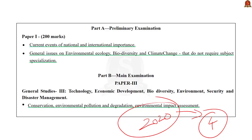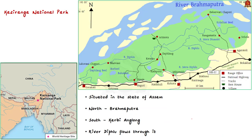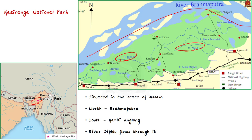Kaziranga National Park — have a look at this map for better understanding. As you can see, Kaziranga National Park is located in Assam. The Brahmaputra River flows along the edges of the National Park, so Kaziranga is situated on the southern banks of the Brahmaputra. River Diphu (T-I-P-H-L-U) flows right through Kaziranga National Park — this is a very important point, as UPSC has asked about rivers passing through National Parks. River Diphu passes right through Kaziranga National Park.